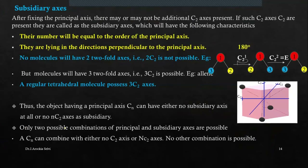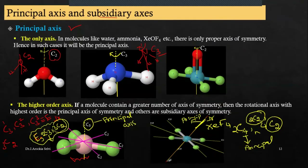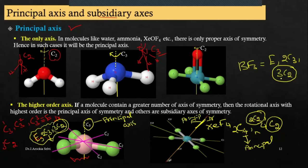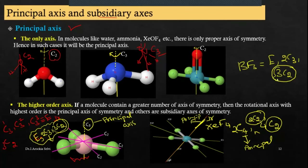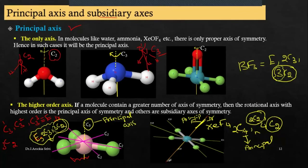So what are the subsidiary axes? For BF3, we had E, two C3s, and three C2s. The subsidiary axes are the three C2s. How many subsidiary axes are present? Three — and this number is equal to the highest order of symmetry. The highest order axis is C3, order three, so there are three subsidiary axes.